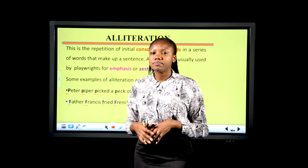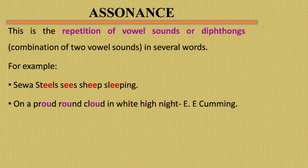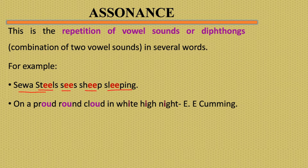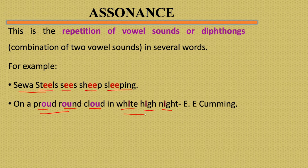Assonance is the repetition of vowel sounds or diphthongs — more than one vowel sound — in a series of words. For example: 'Shewa Steels sees sheep sleeping' — here Shewa Steels is a person's name, and we see the repetition of diphthongs. Another example: 'On a proud round cloud in white high nights' — there is also a repetition of diphthongs and vowel sounds.